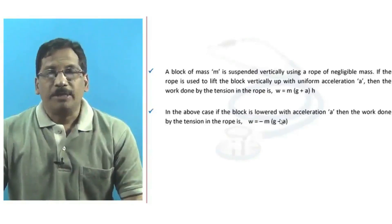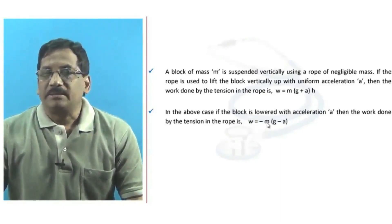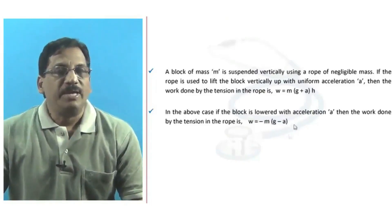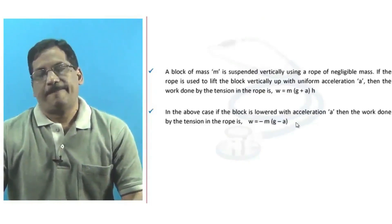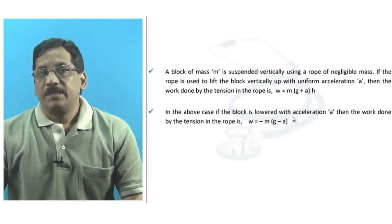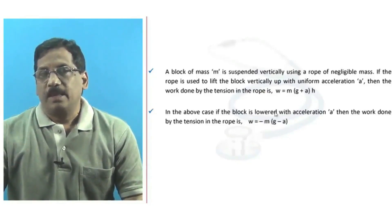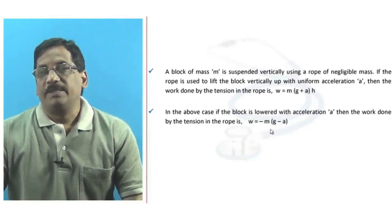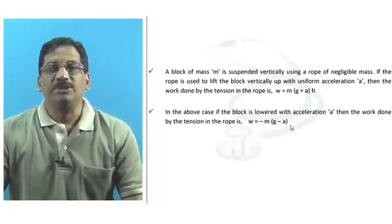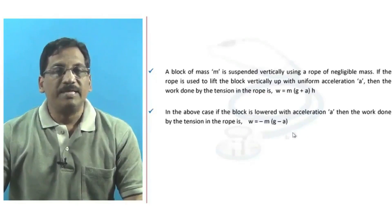If the block is instead lowered with acceleration a, the work done by the tension in the rope is W = −m(g − a) × h. When the load is pulled up, work done by tension is positive; when the load is released to move down with acceleration a, the work done by tension is −m(g − a) × h.